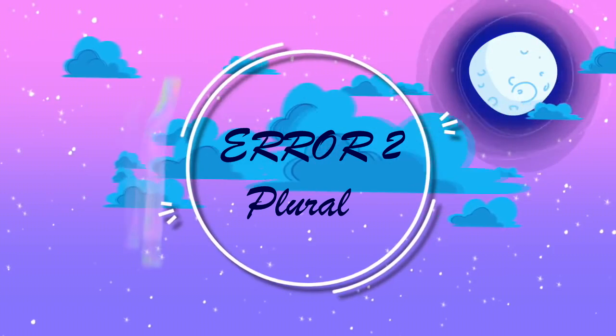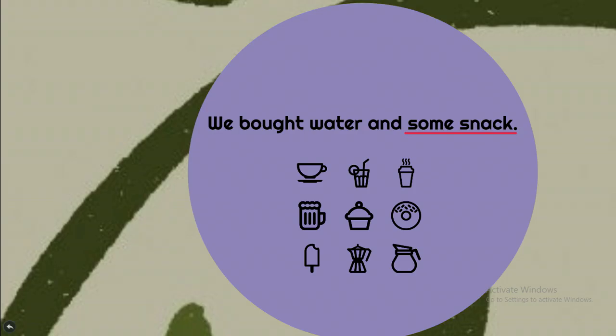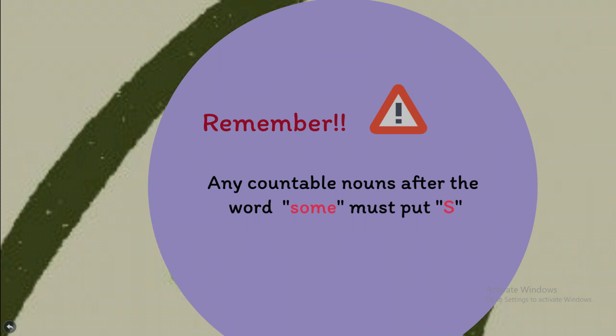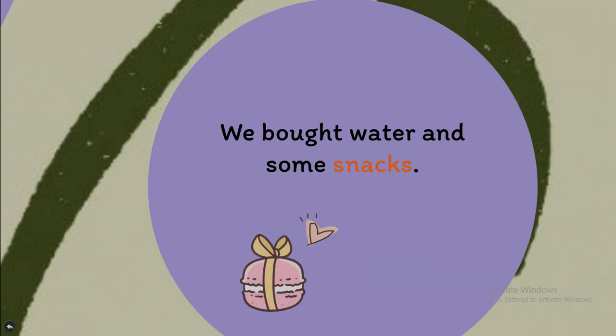Error 2: Plural. Example: 'We bought water and some snack.' When you notice this sentence, you will see that it has a visible mistake. Look at the word 'snack.' Snack is a countable noun. Remember that any countable noun after the word 'some' must be plural. So 'snack' here needs an 's' at the end. It would become: 'We bought water and some snacks.'